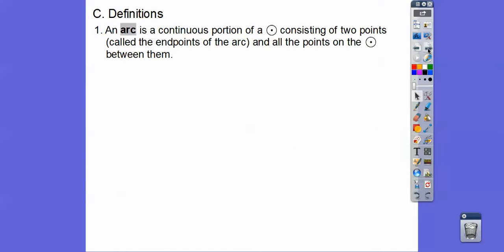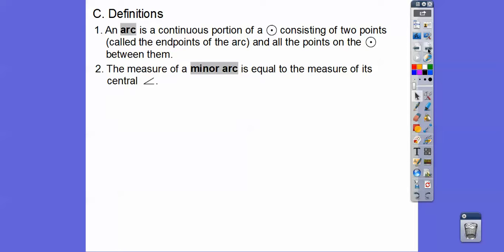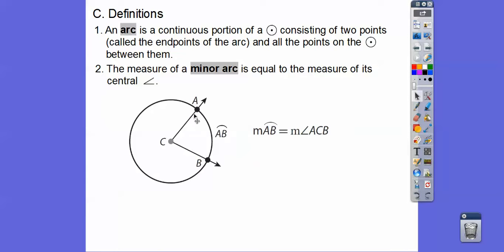An arc is a continuous portion of a circle consisting of two endpoints and all the points on the circle between them. The measure of a minor arc is the same as its central angle. So arc AB — labeled with a little arc symbol on top — has a measure equal to the measure of the central angle ACB.